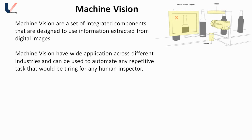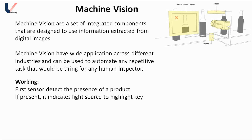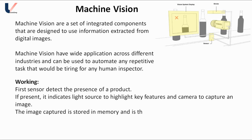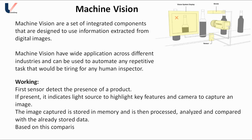First, the sensor detects the presence of the product. If the product is present, it signals the light source to highlight the key features of the bottle and indicates the camera to capture an image. The captured image is stored in memory, then processed, analyzed, and compared with already stored data. If any defect is found, the product fails and goes to the refilling station. If there is no defect and the soft drink level is as desired, the product passes and moves toward finalization.